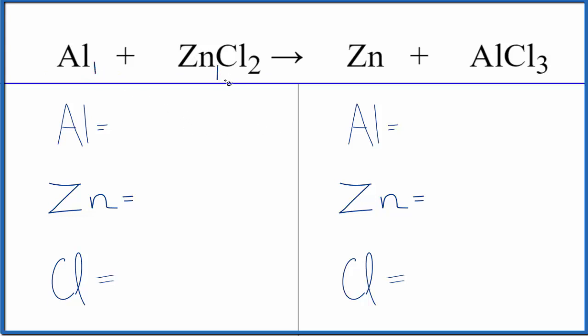We have one aluminum atom, one zinc, and two chlorine atoms in the reactants. For the products, we have one zinc, one aluminum, and three of these chlorine atoms.